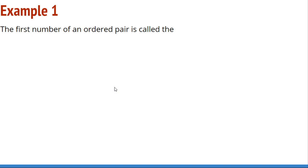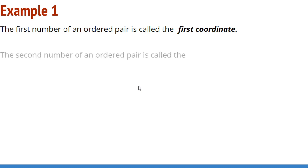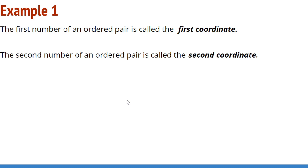The first number in an ordered pair is called the first coordinate — go ahead and write that down. We're also going to call this the x-coordinate. The second number of an ordered pair is called the second coordinate, and we'll start calling it the y-coordinate. Although it is inevitable as I teach this lesson that I will call them the x-coordinate and the y-coordinate, so we should write those down too.